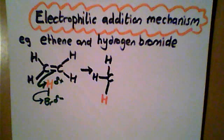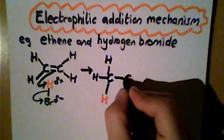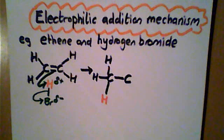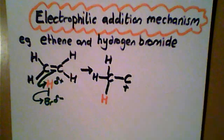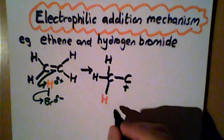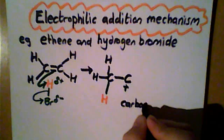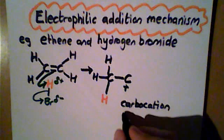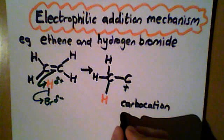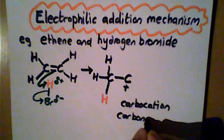It follows that if this carbon has lost an electron, it will now get a positive charge. We call this species a carbocation, and some textbooks refer to them as carbonium ions.